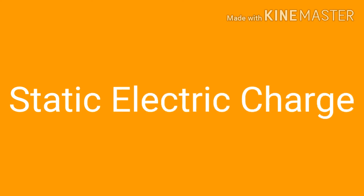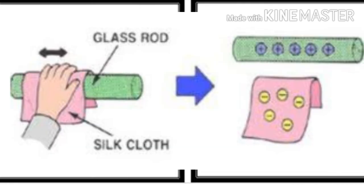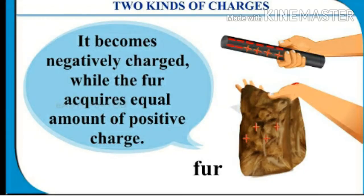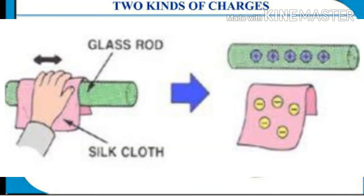We'll see another activity. When a glass rod is rubbed on a silk cloth, the glass rod gets positive charge and the silk cloth gets negative charge. Next, if we rub an ebonite rod on wool or fur, then the ebonite rod acquires negative charge and the wool acquires positive charge.